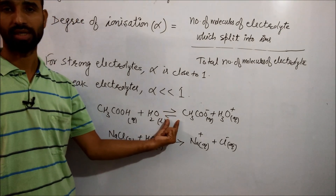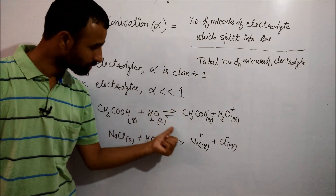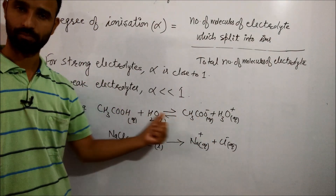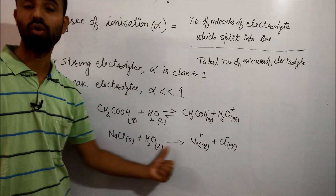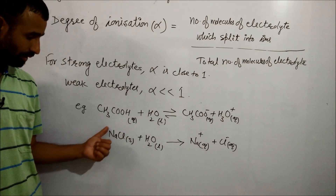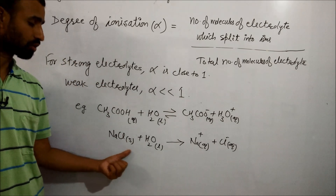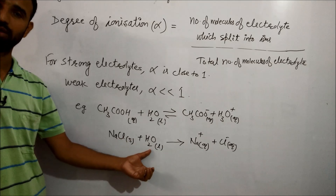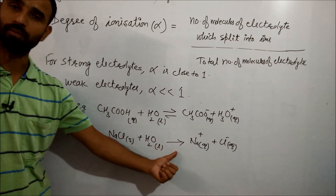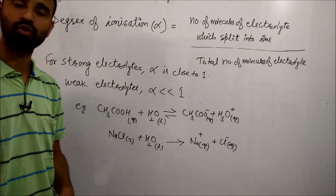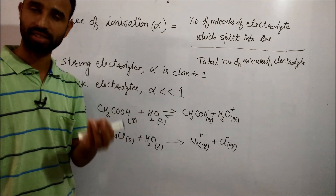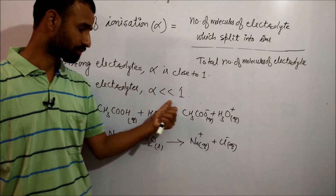In weak electrolytes, the unionized form and ionized form are in equilibrium. In the case of strong electrolytes, there is no equilibrium unless we have a saturated solution. If we keep dissolving NaCl, a stage is reached when it is in equilibrium — only then is it represented in terms of equilibrium.